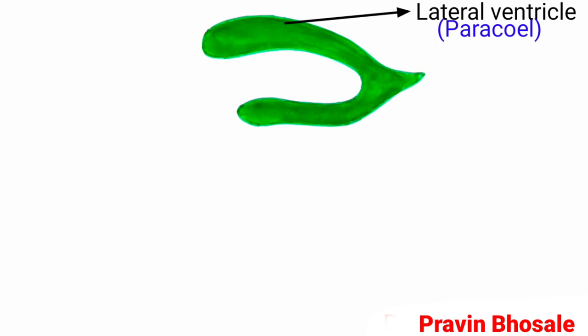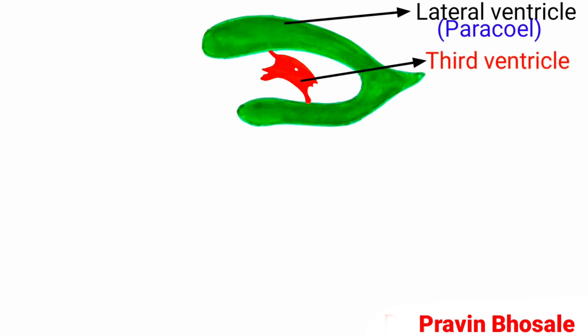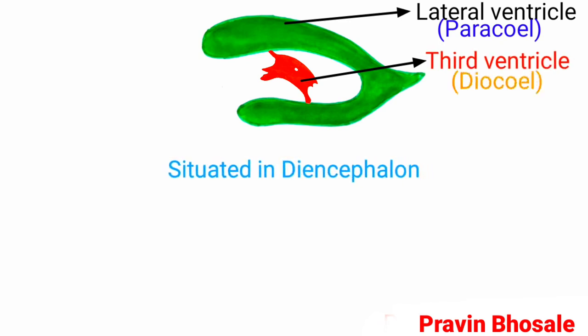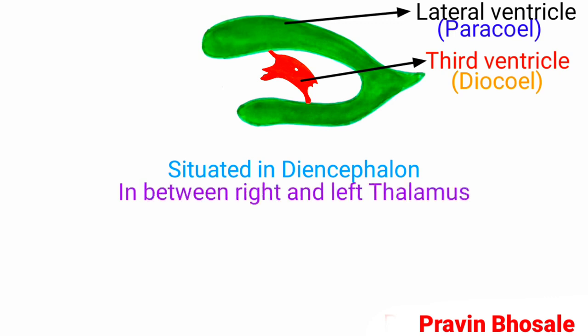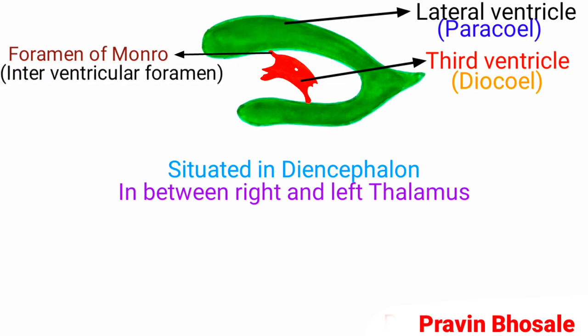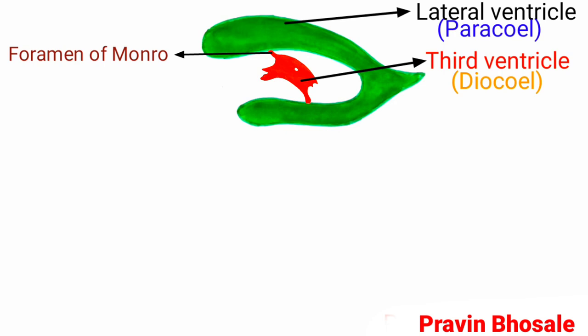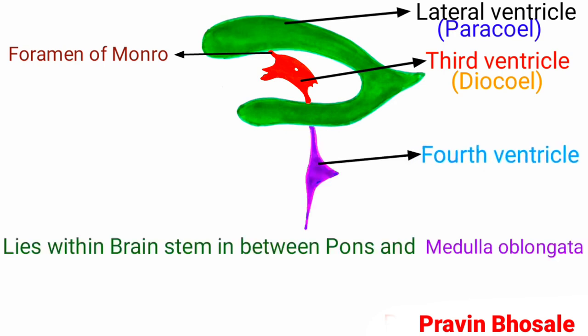The upper roof of the lateral ventricle is called the pallium. The third ventricle, also called diocele, is situated in the diencephalon between the right and left thalamus. It is attached to the lateral ventricles by a narrow opening called the foramen of Monroe, that is, the interventricular foramen.